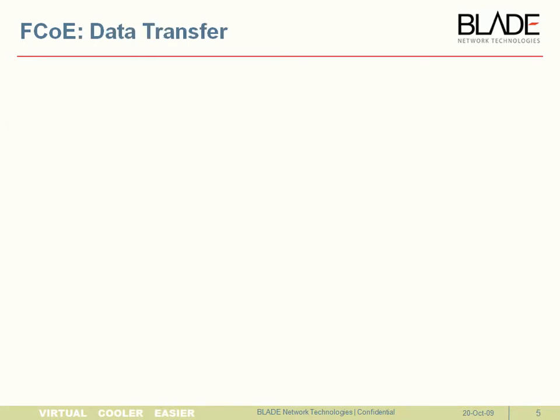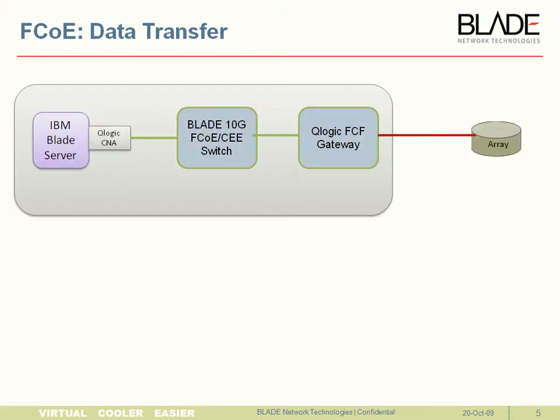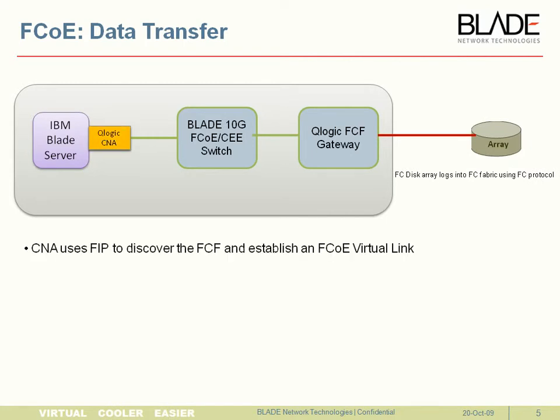First, we will take a look at how the data transfer happens in an FCoE setup. In the beginning, the CNA would use the FCoE FIP protocol to discover the FCF gateway through the FCoE transit switch, and then establish a virtual link.